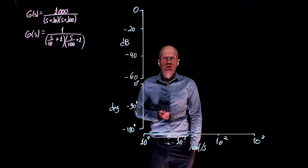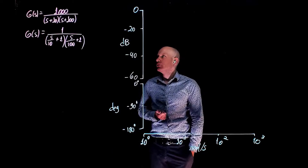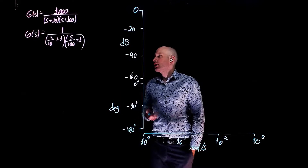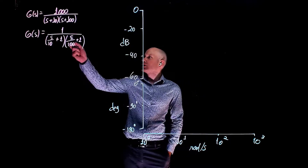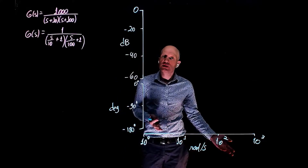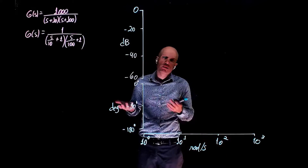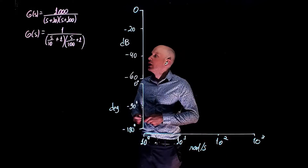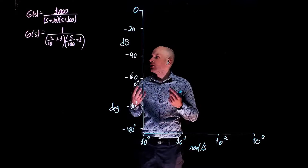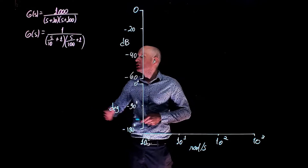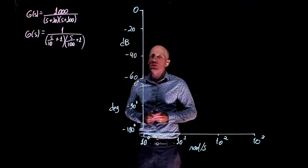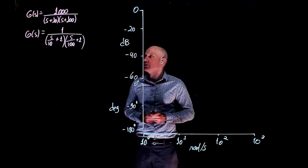Now let's complete the Bode plot for this function. Looking at this function, we have three elements: a constant gain of 1 — on the Bode plot that would be zero, so we can neglect it since 20 log of 1 is zero — and two real poles. These poles have cutoff frequencies: one at 10 radians per second and the other at 100 radians per second.